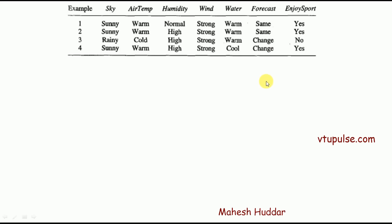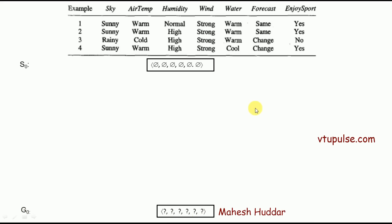Now, with the candidate elimination algorithm, the very first thing we need to do is set the most specific and most generic boundaries. This is the most generic boundary consisting of all question marks, represented as G0, and this is the most specific boundary consisting of all nulls, represented as S0.